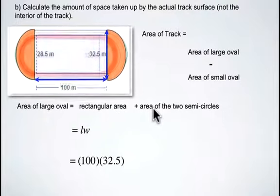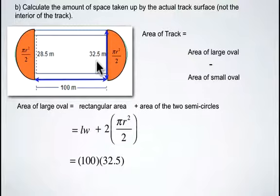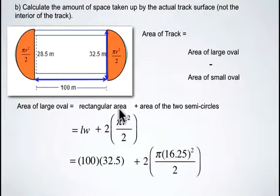Now we need to know the area of the two semicircles on the ends. And again, we want to use this diameter of 32.5 as our diameter, not the 28.5. So the formula to calculate the area of the two semicircles would be 2 multiplied by the formula to calculate the area of one semicircle, pi r squared divided by 2. And making our substitution of 16.25, which is half of 32.5, we can calculate the area of the two semicircles.